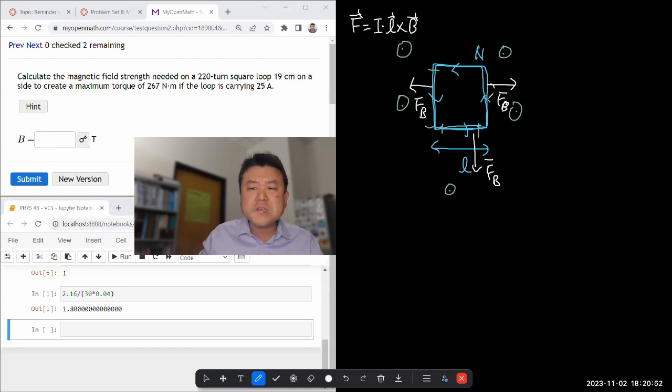So magnetic force this way. And I hope as you draw this, you get, oh, this is just going to make the loop bulge out. It's not going to cause it to rotate. There's no torque here.